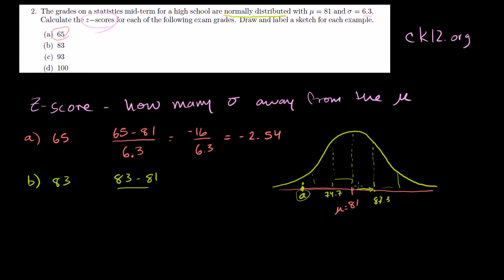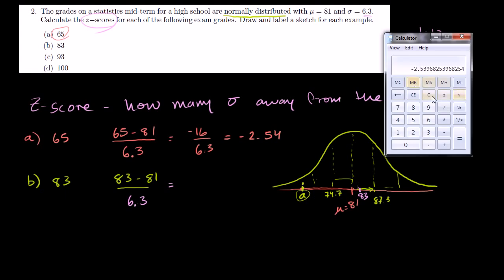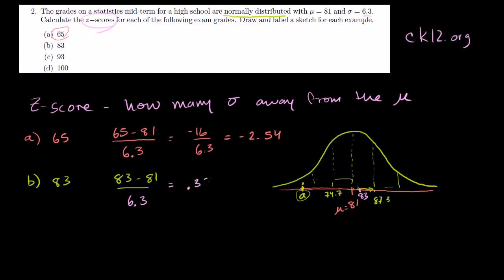And then part B, 83. 83 is going to be right here, a little bit higher. The z-score here, 83 minus 81 divided by 6.3, equals 0.32. So 83 is 0.32 standard deviations above the mean, about one third of the standard deviation along the way.